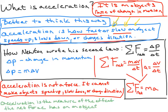If an object speeds up and you say it's because of acceleration — no, that's wrong. Acceleration can't make anything do anything. Acceleration is how fast or slow an object speeds up, slows down, or changes direction. It's a rate, it's a value.